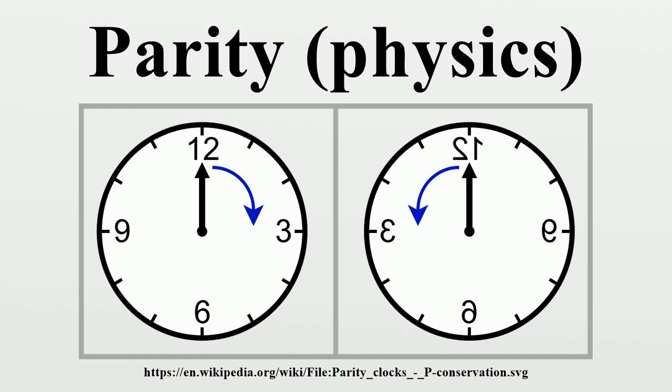First, parity forms the abelian group Z2 due to the relation P² equals 1. All abelian groups have only one-dimensional irreducible representations. For Z2, there are two irreducible representations. One is even under parity, the other is odd.